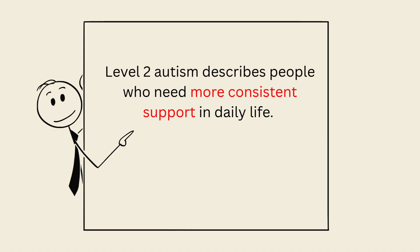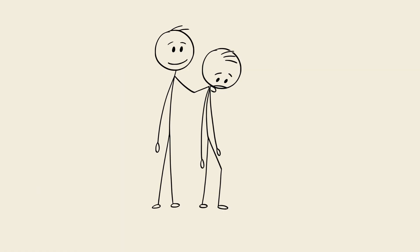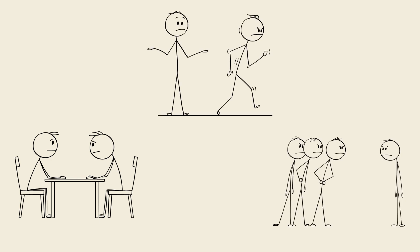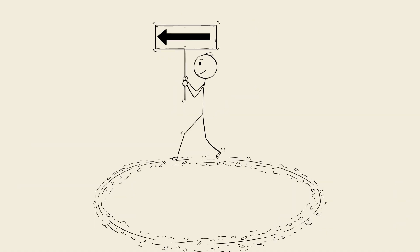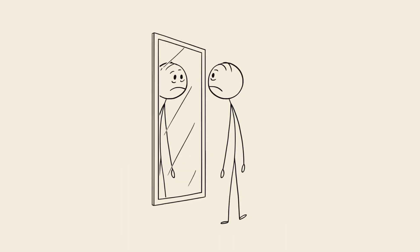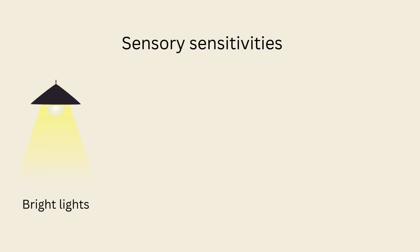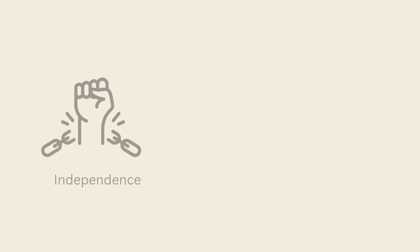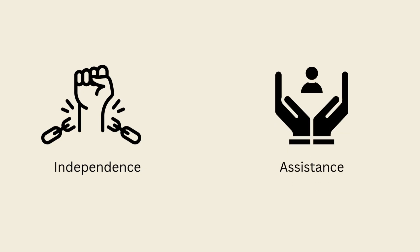Level 2 Autism describes people who need more consistent support in daily life. Social challenges are clear and often noticeable to others — starting or maintaining conversations can be very difficult, and understanding social cues doesn't come naturally. Relationships can feel confusing, overwhelming, or exhausting. Repetitive behaviors and strict routines are more pronounced at this level, and a change in schedule or environment can trigger distress. Sensory sensitivities — like bright lights, loud sounds, or certain textures — are often strong and can make everyday environments uncomfortable or unbearable. Independence is possible in some areas, but ongoing assistance is usually needed for organization, communication, or handling responsibilities.